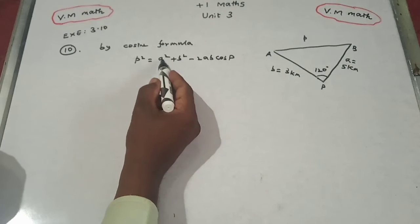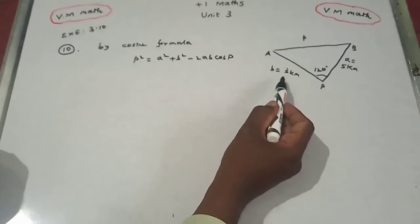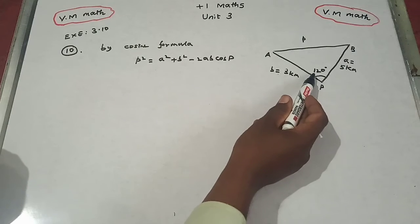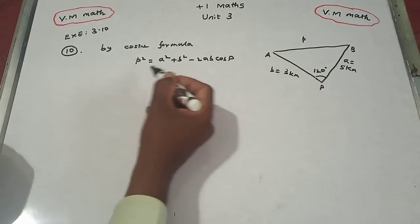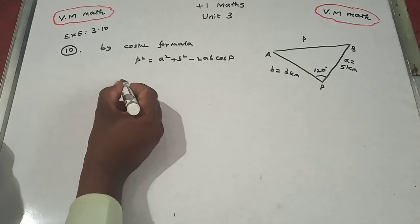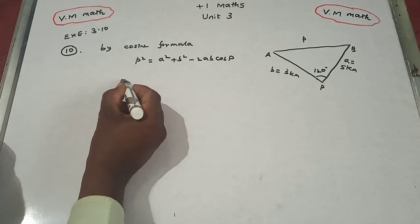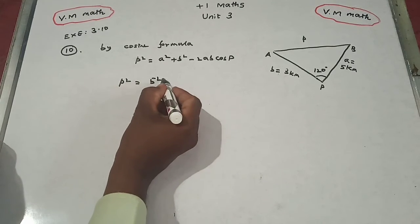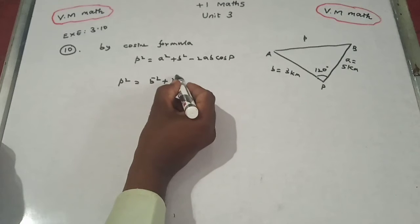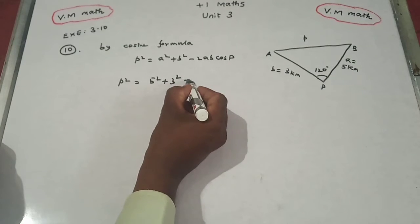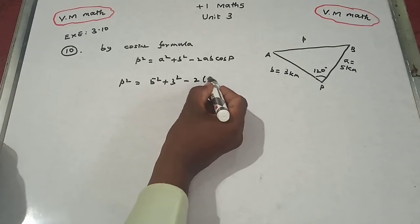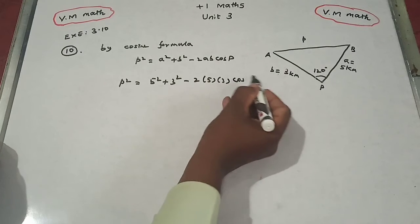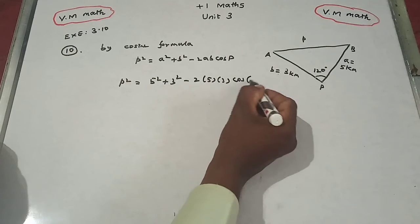P equals 120 degrees, so substituting: p² = 5² + 3² − 2 × 5 × 3 × cos(120°).